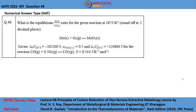Let us solve the 40th question of GATE 2022. What is the equilibrium PCO by PCO2 ratio for the given reaction at 1873 Kelvin? The reaction given is molybdenum plus oxygen gives molybdenum dioxide, and the Gibbs energy of formation of molybdenum dioxide at 1873 Kelvin is minus 262300 joules, and activity of molybdenum dioxide is 0.5. The Gibbs energy of reaction for carbon monoxide plus half O2 gives carbon dioxide is minus 120860 joules, and the gas constant is 8.314 joules per Kelvin per mole.